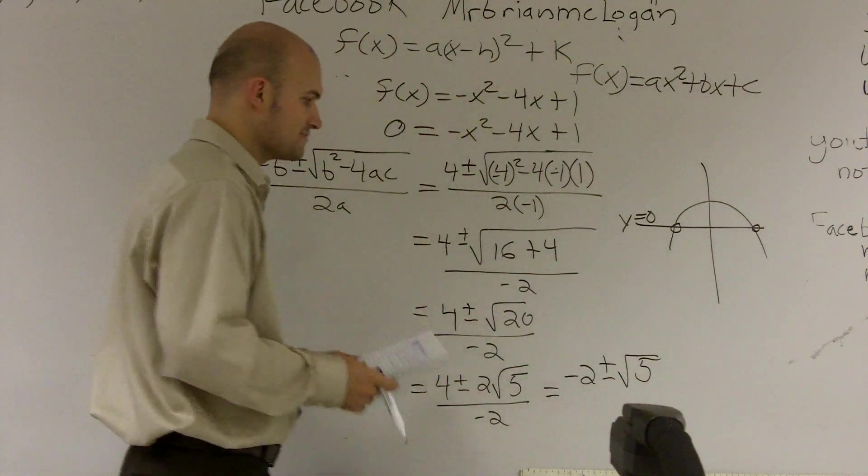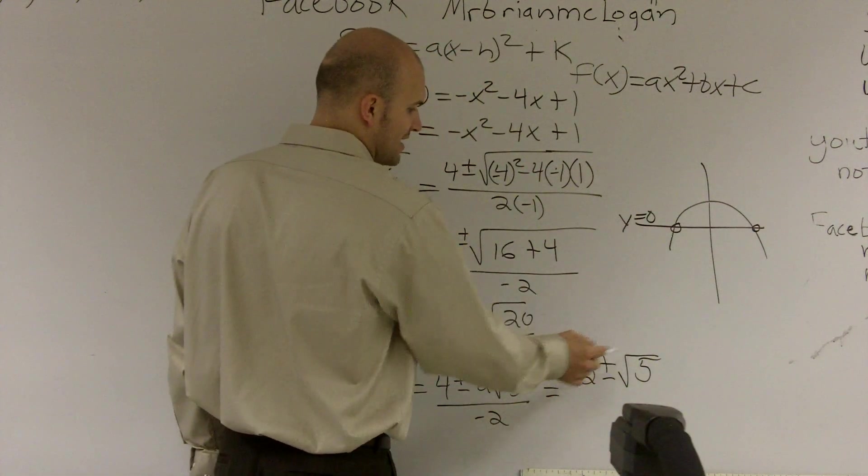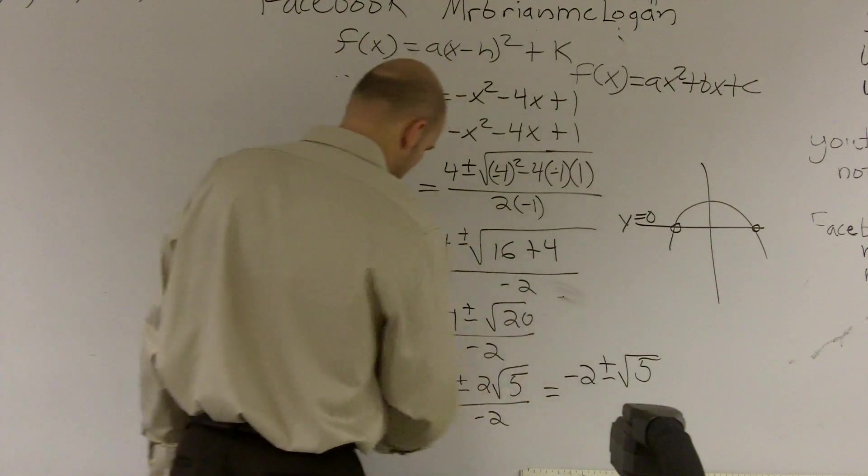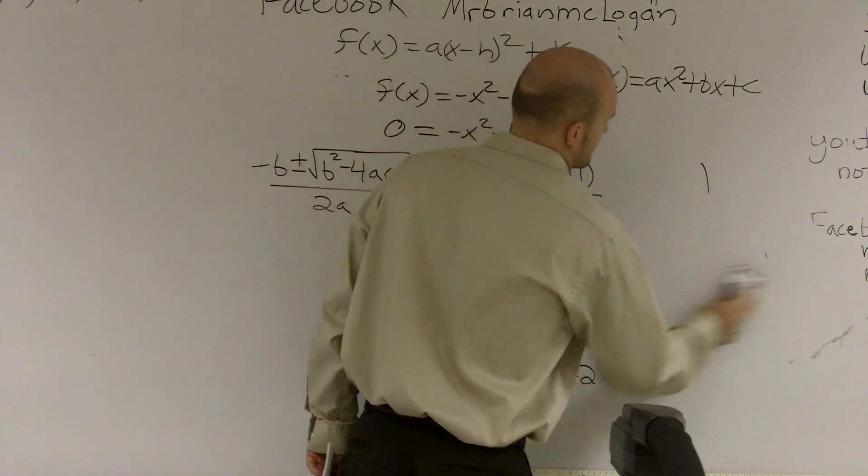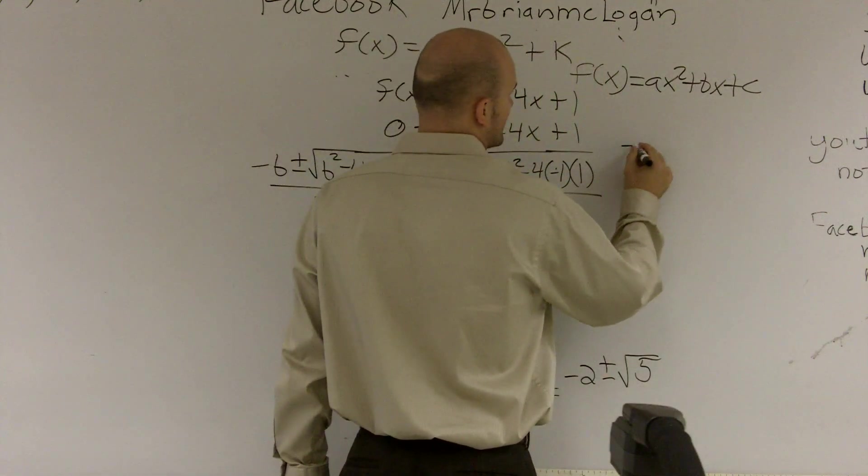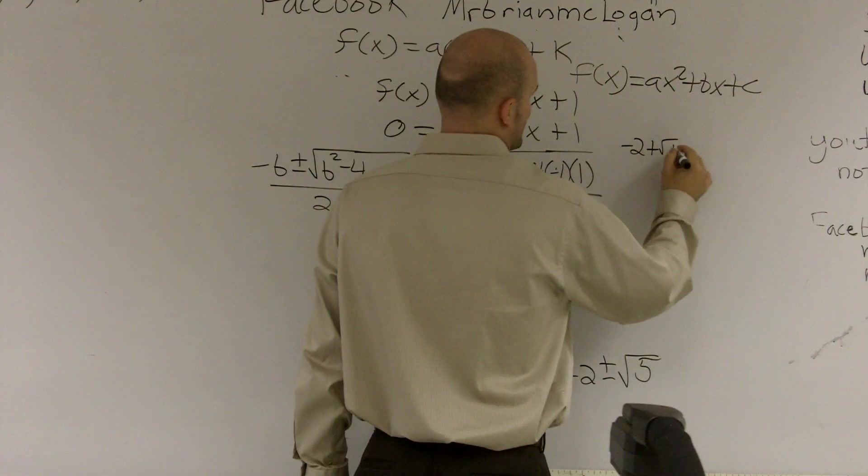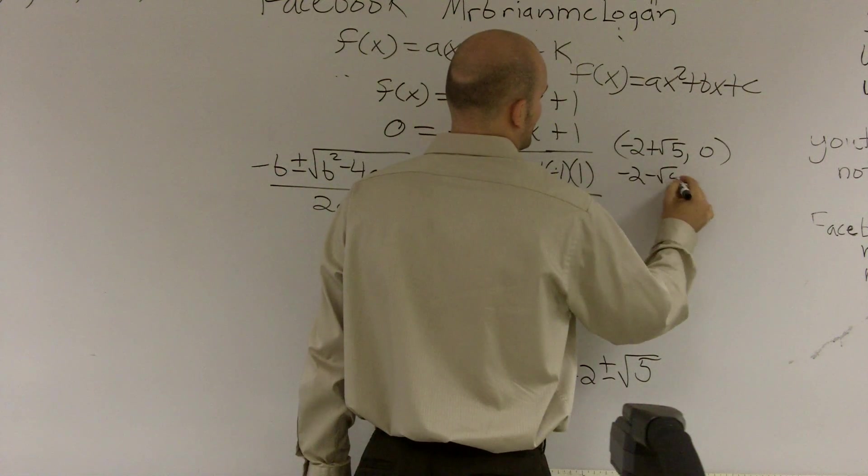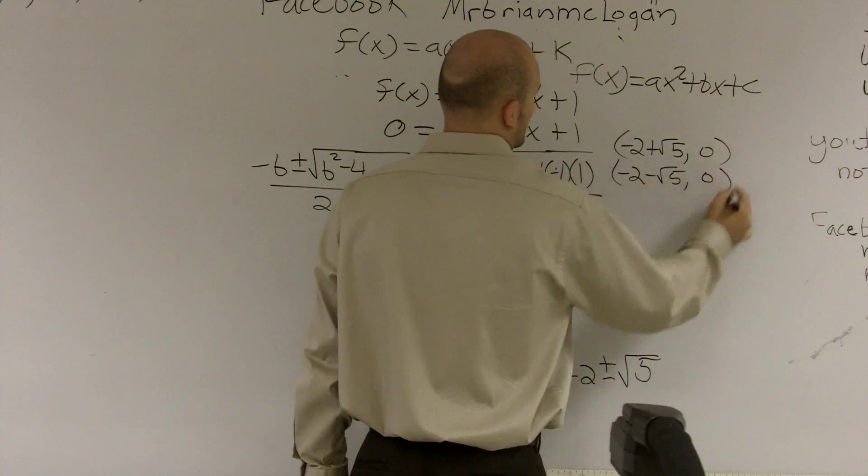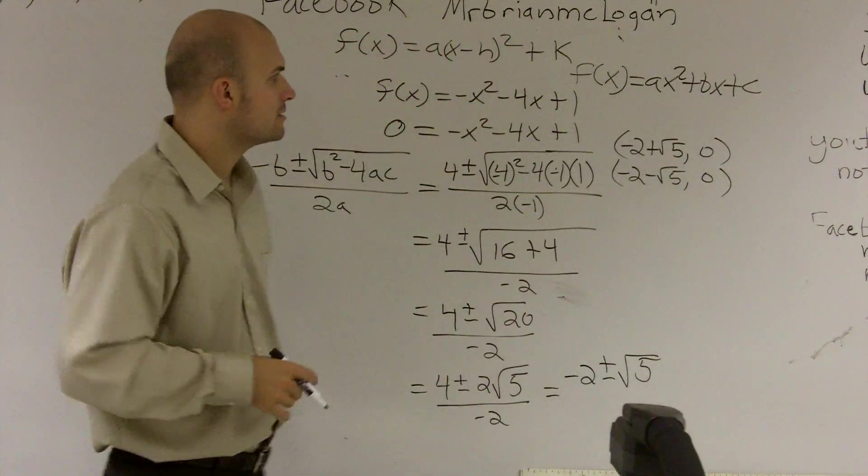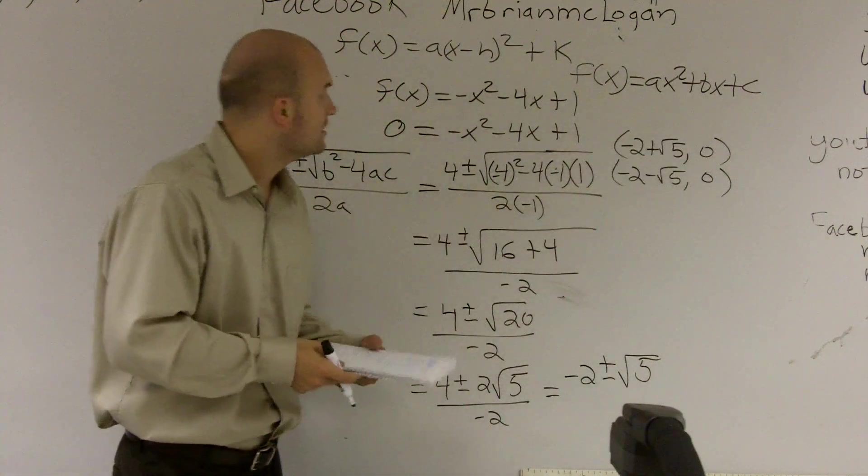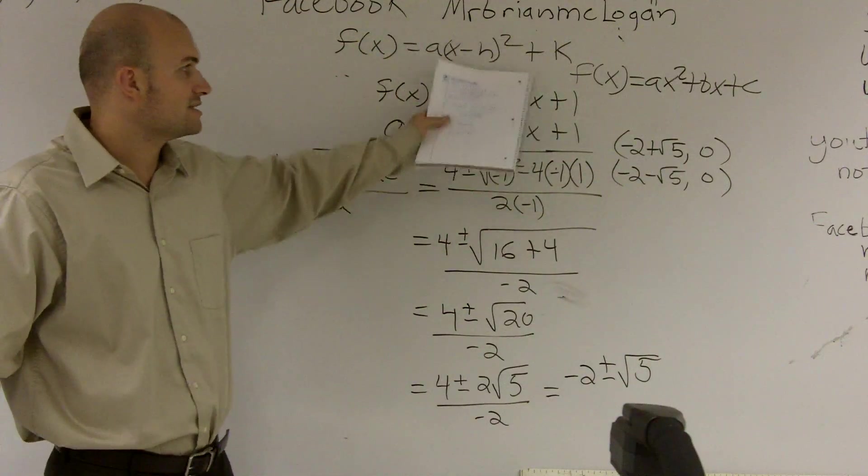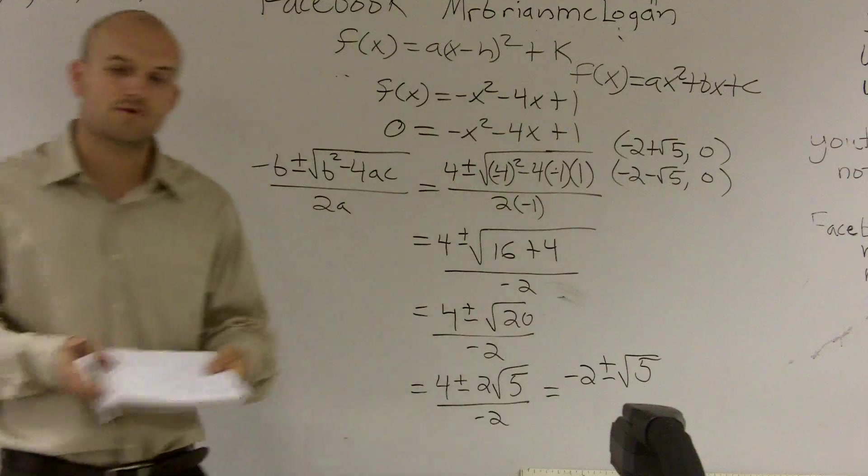So your two x-intercepts would be negative 2 plus square root of 5 and negative 2 minus square root of 5. So you have negative 2 plus square root of 5, comma 0, and negative 2 minus square root of 5, comma 0. Because remember your y-value is going to be, it's always going to be 0 at the x-intercept. So that is, given a function, that is how you find the vertex using the standard form, and also finding the x-intercepts using the quadratic formula.